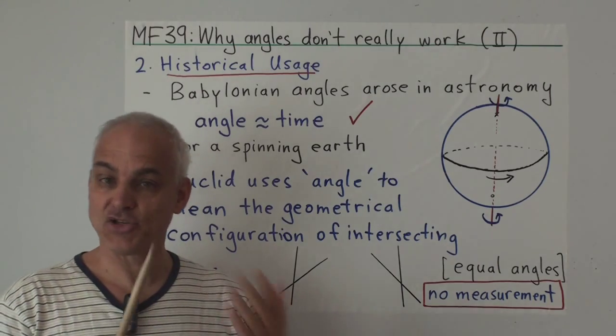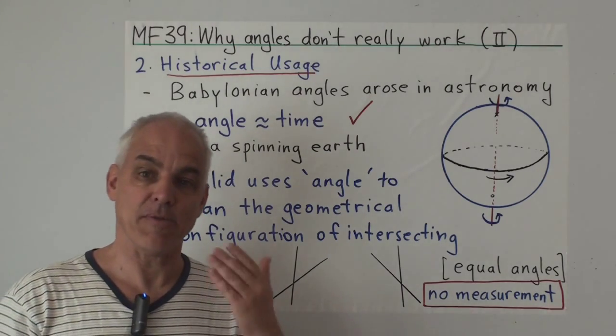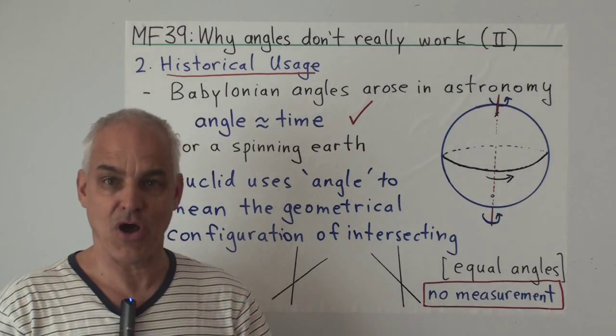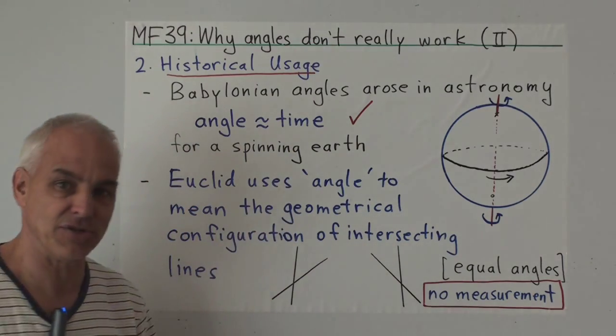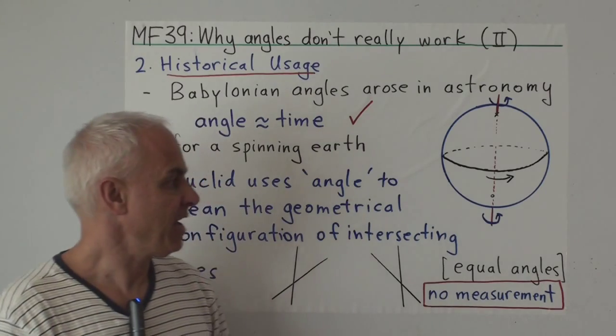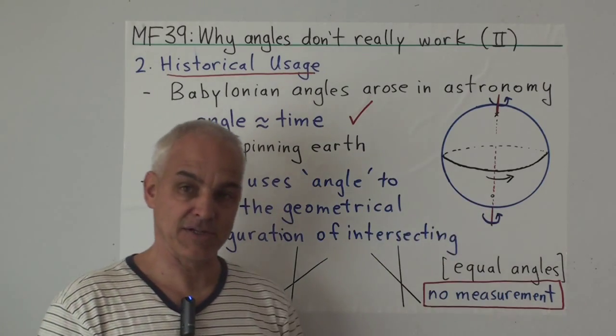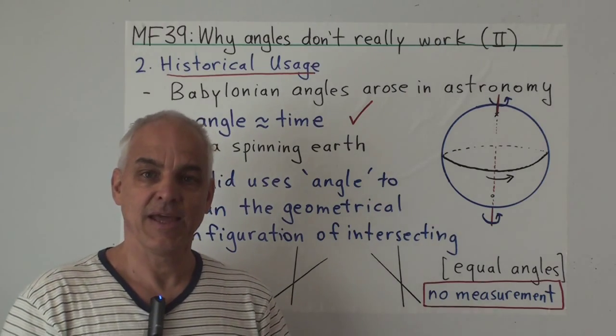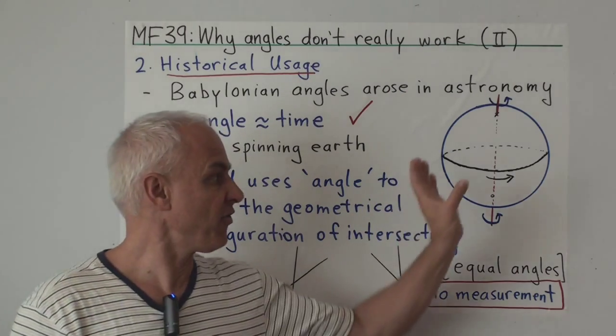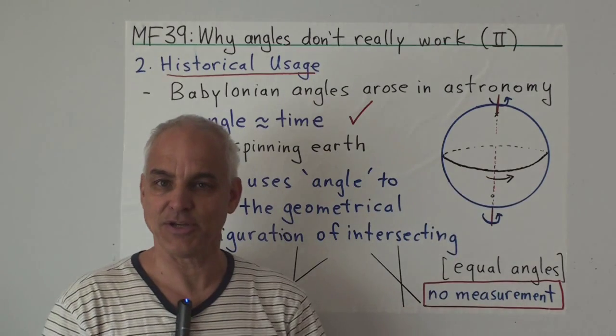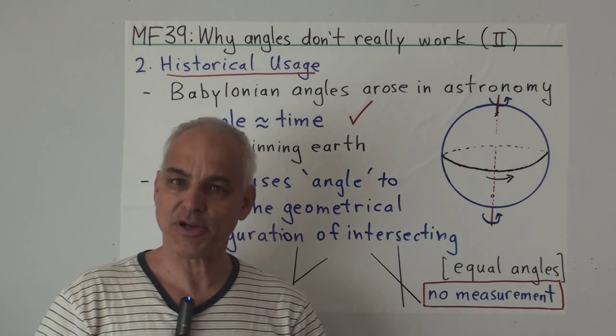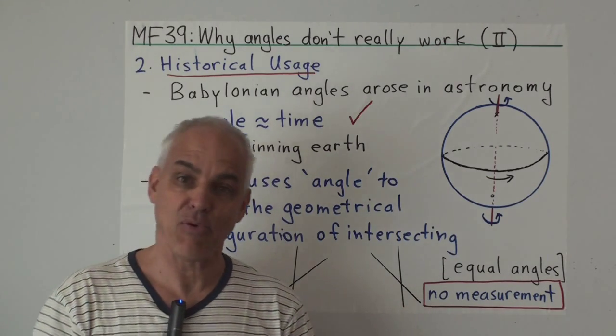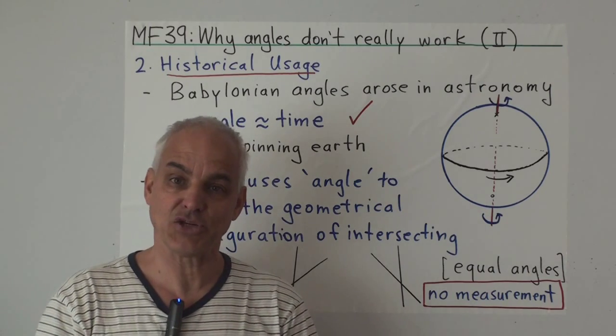It means that for astronomy angles are natural and a good concept because they have a direct physical connection to time. In fact, for most of the years that trigonometry has been studied, for two or three thousand years, the emphasis has been on the spherical trigonometry associated to astronomy. Planar trigonometry was relatively unimportant until only a few centuries ago.